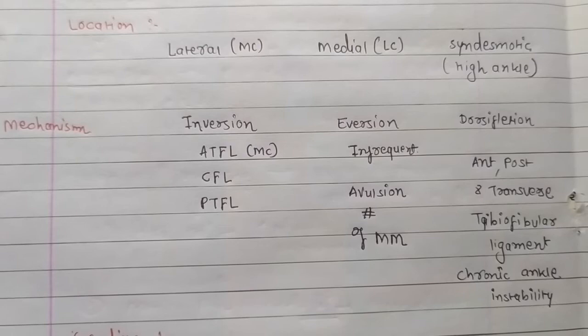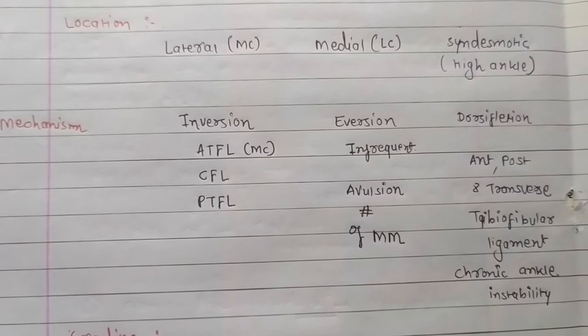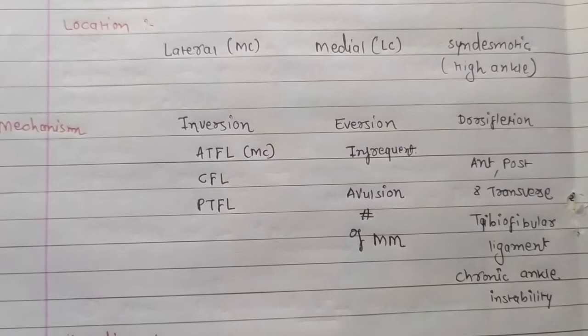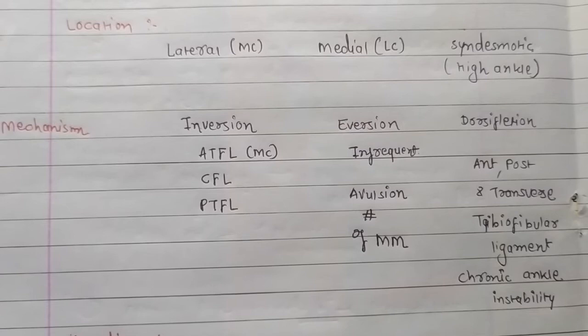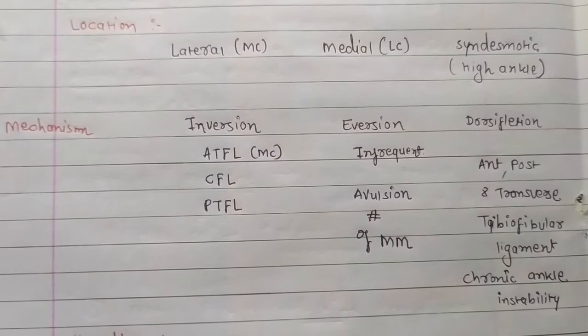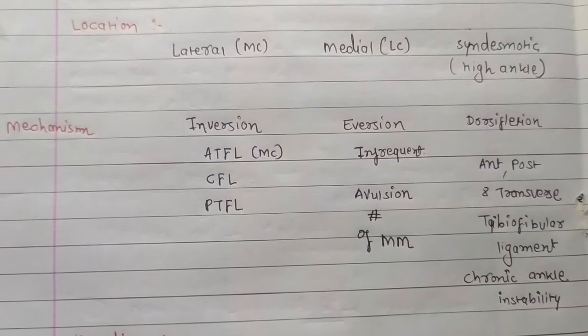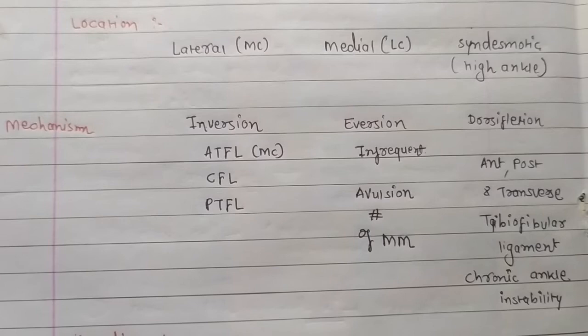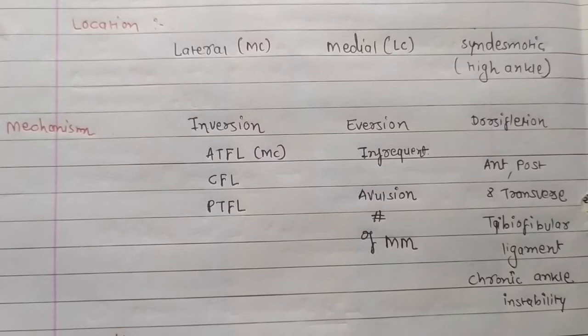In medial sprain there is excessive eversion, and in syndesmotic sprain there is excessive dorsiflexion. Lateral sprain involves the ATFL, CFL, and PTFL — that is, the anterior talofibular ligament, calcaneofibular ligament, and posterior talofibular ligament. The ATFL is the most commonly injured ligament, while isolated CFL injury is uncommon.